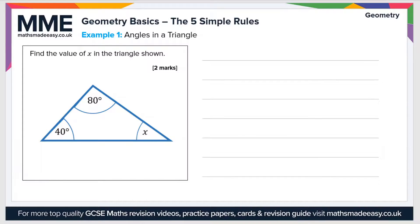So let's have a look at an example question now. Find the value of x in the triangle shown. For this we're going to use rule 1, which was that all angles in the triangle sum to 180 degrees. So let's write an expression: x plus 40 plus 80 equals 180 degrees.